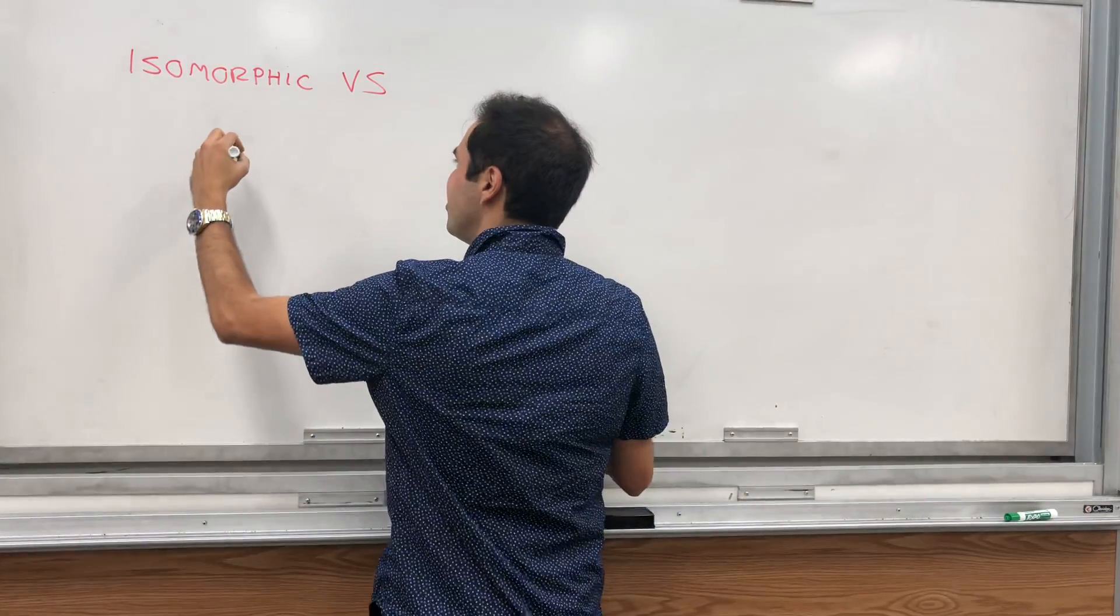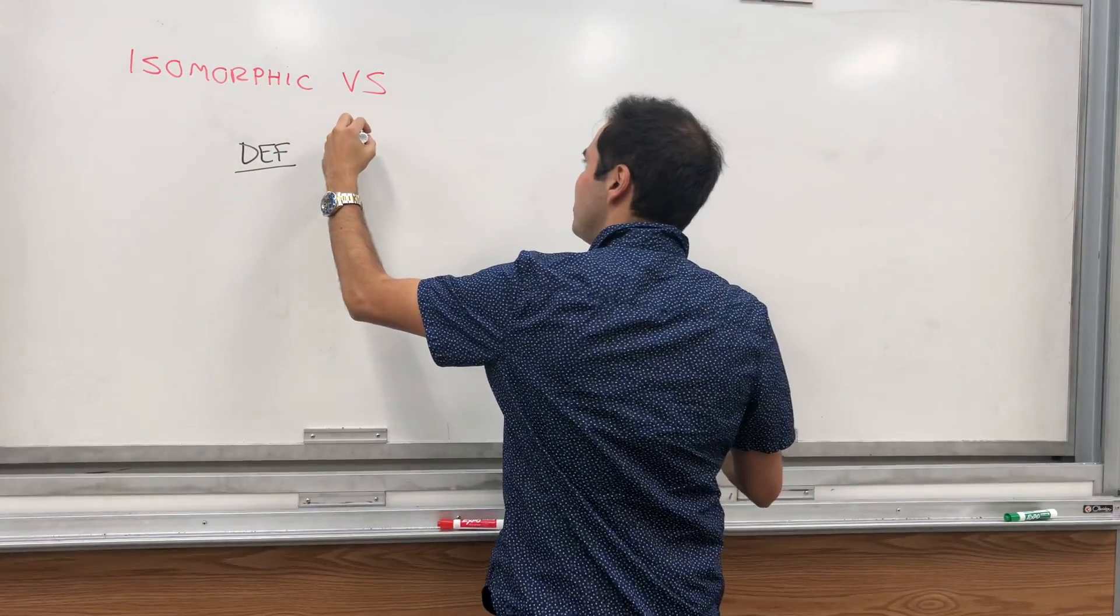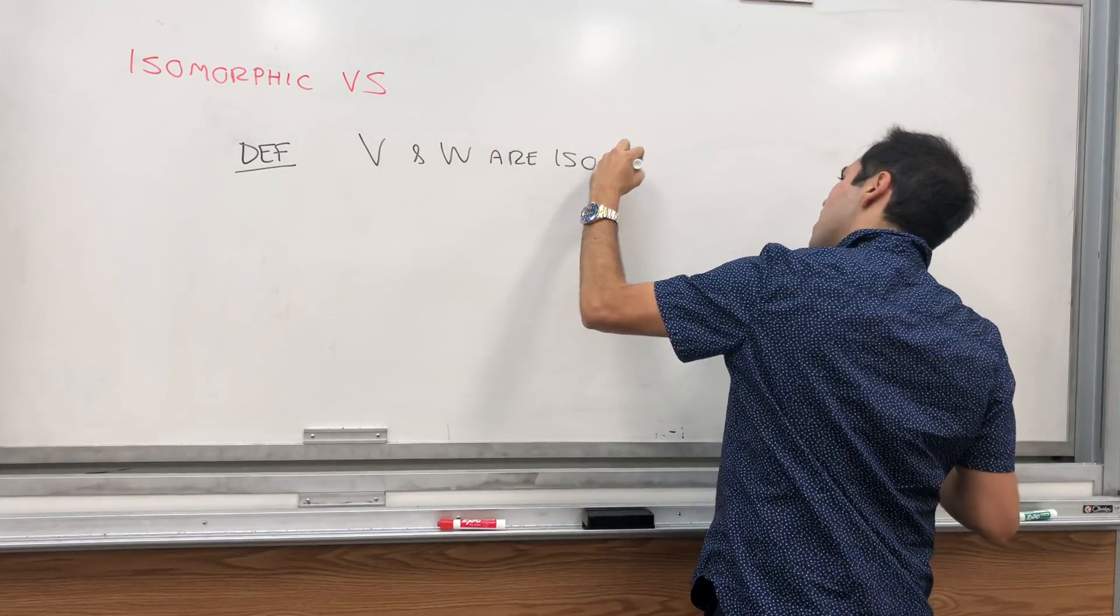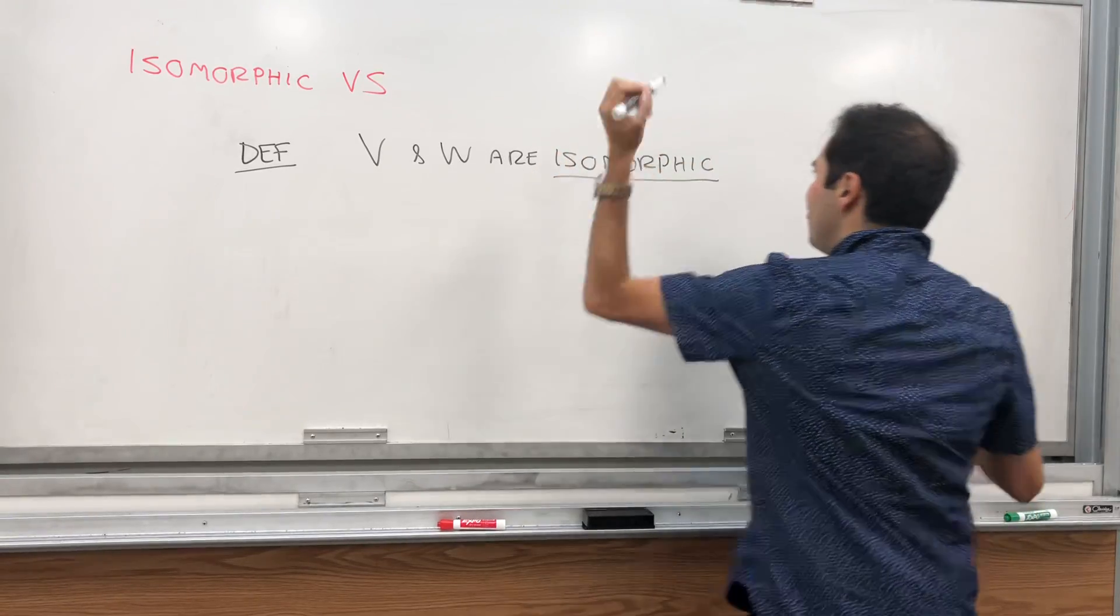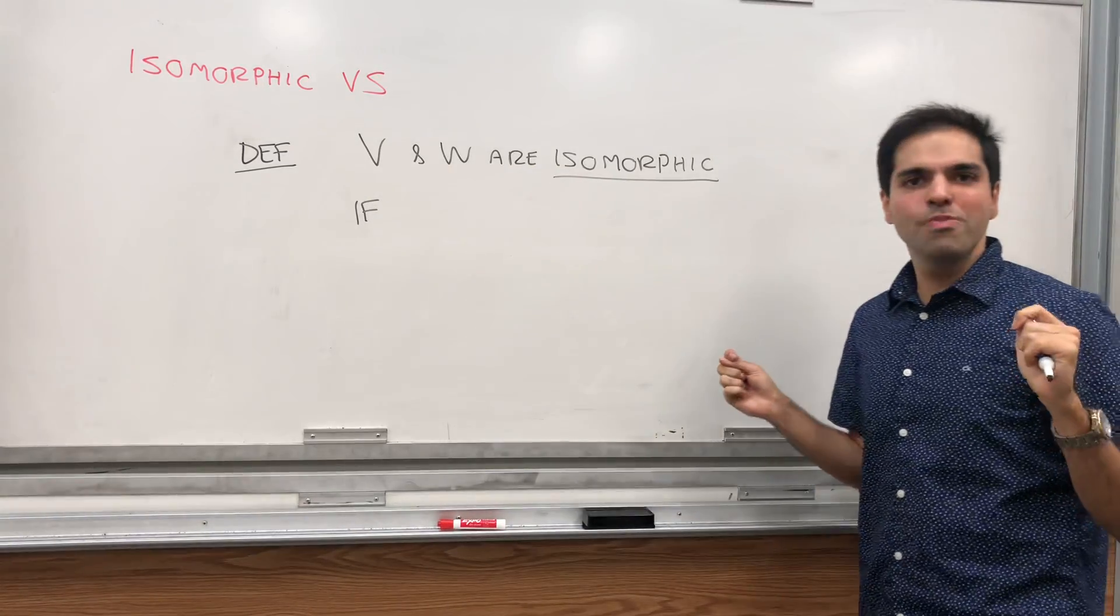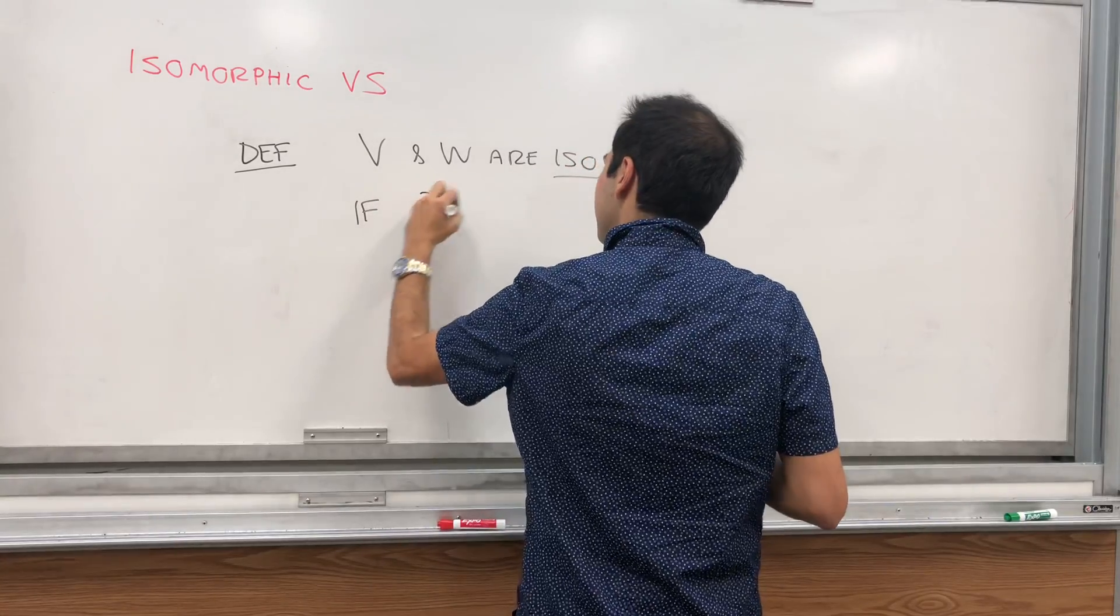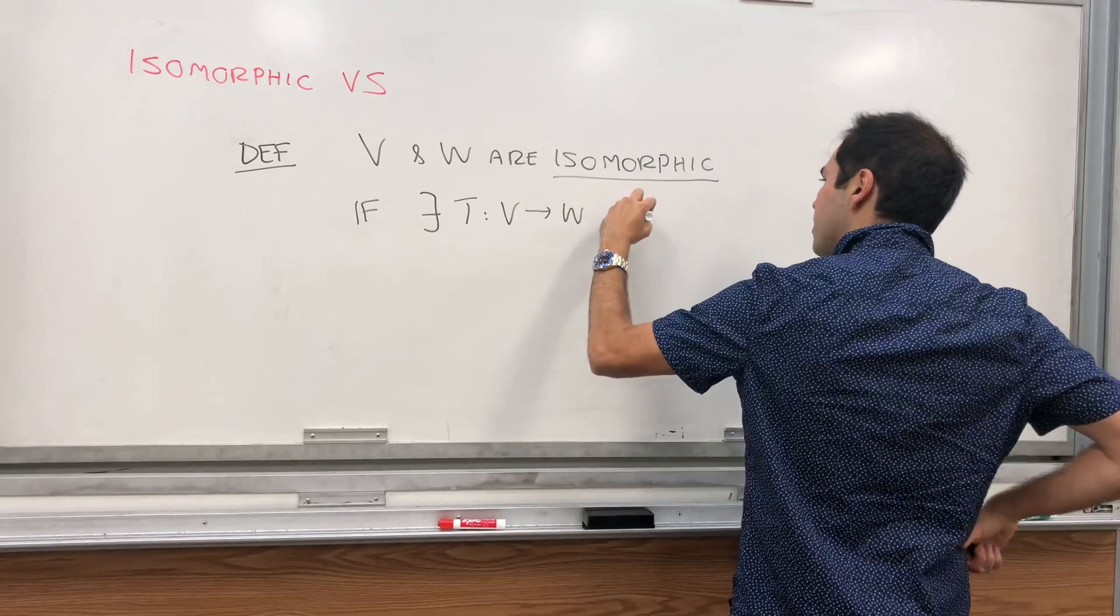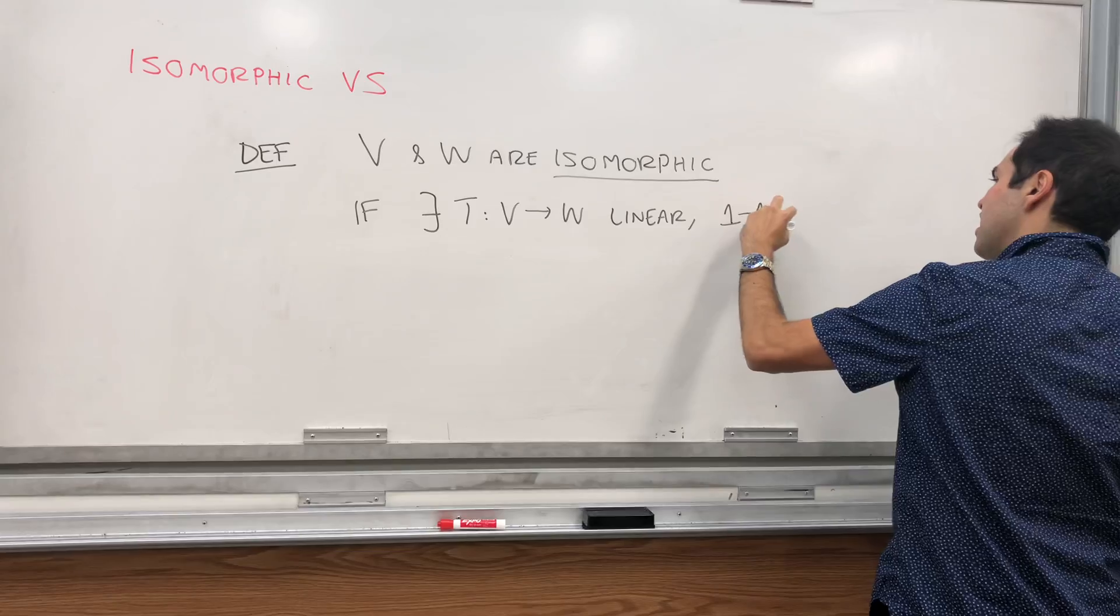So just recall, in case you don't know, definition: two vector spaces V and W are isomorphic if and only if there exists a linear transformation between them that's one to one and onto. There exists T from V to W, linear transformation, basically invertible, right? One to one and onto.